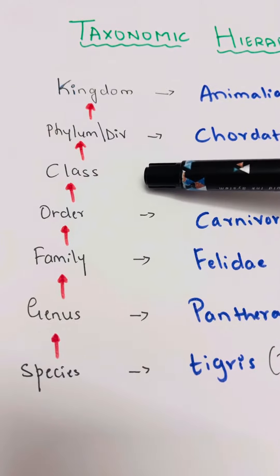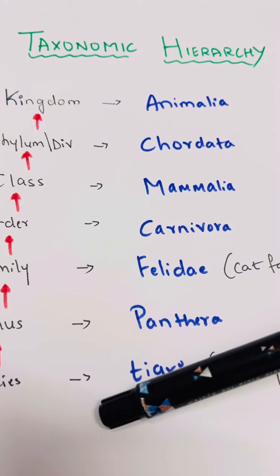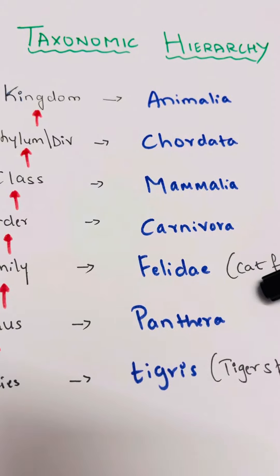Kingdom, phylum, class, order, family, genus, species. So today we'll see the systematic position or taxonomic hierarchy of tiger.